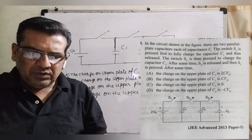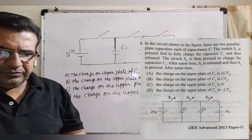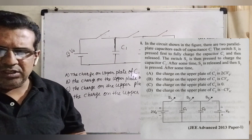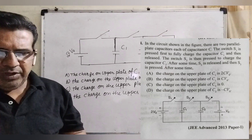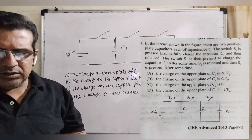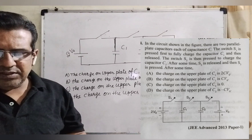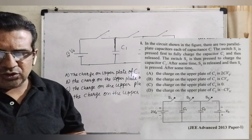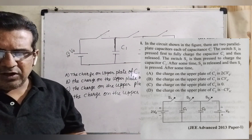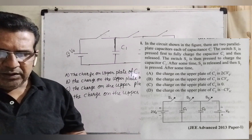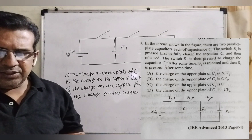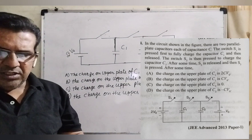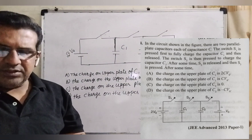Here are four options. Option A: the charge on the upper plate of C1 is 2CV0. Option B: the charge on the upper plate of C1 is CV0. Option C: the charge on the upper plate of C2 is 0. Option D: the charge on the upper plate of C2 is minus CV0. This question is from JEE Advanced 2013.